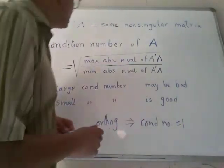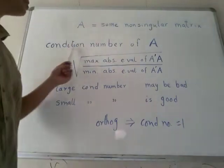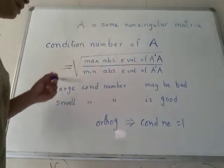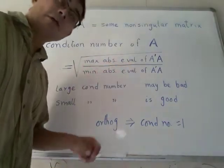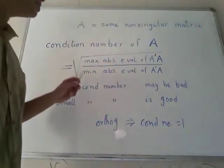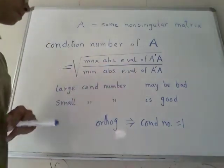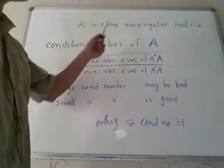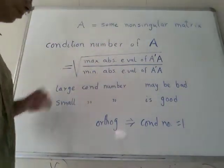Suppose I have a non-singular matrix A. Then I define the condition number of A as square root of maximum absolute eigenvalue of A transpose A divided by minimum absolute eigenvalue of A transpose A. Since I am working with a non-singular matrix, the denominator can never vanish. So that is the number.